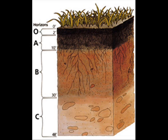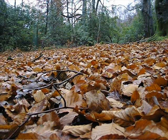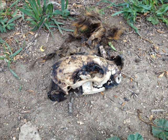Let's start on top with the superficial-most layer, the O, or organic, horizon. If you were to go outside right now and look at the soil, you would see lots of plant matter in the O horizon, such as twigs, grass, and leaves, as well as the occasional bit of animal matter, too.